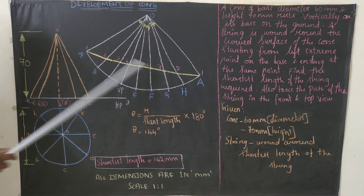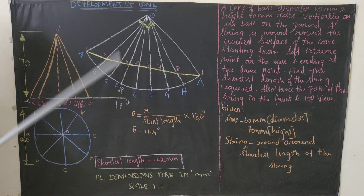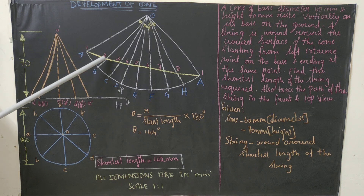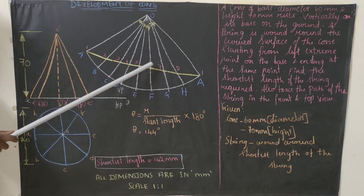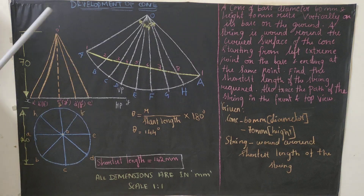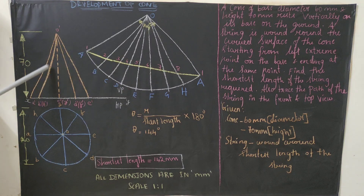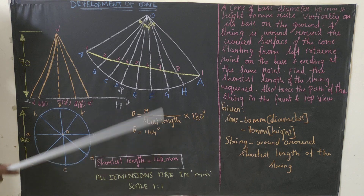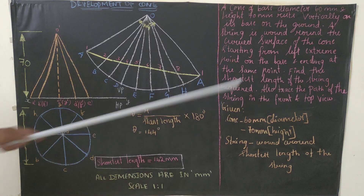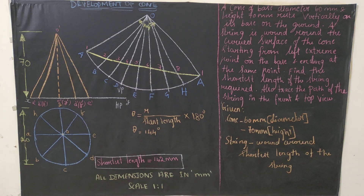To find the shortest length, join the starting A point to the ending A point with your HB pencil. The question asks for the shortest length of the string. When you measure from A to A on the development, you will get 142 mm. So the shortest length is 142 mm.